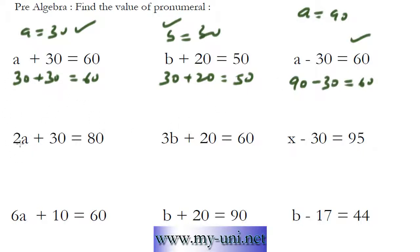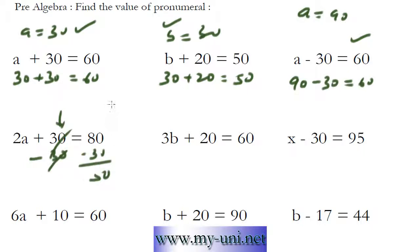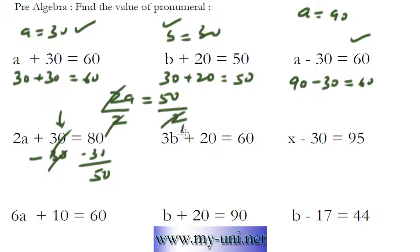Now this one is a bit more difficult. We have to find out the value of 2A first, and then the value of A. So we'll try to get rid of this 30 here. Minus 30 and minus 30 on this side. These two will cancel out. 80 minus 30 is equal to 50. So the value of 2A is equal to 50. And now we have to find the value of A. So we can simply divide both sides of the equation by 2 to get rid of this 2 here. So these two will cancel out. 2 times 25 is 50. And the value of A is equal to 25.